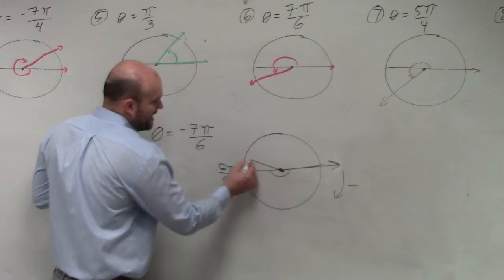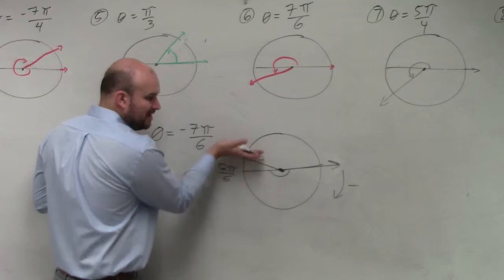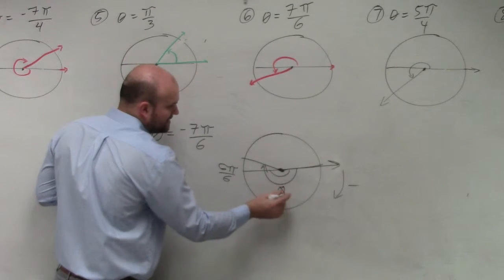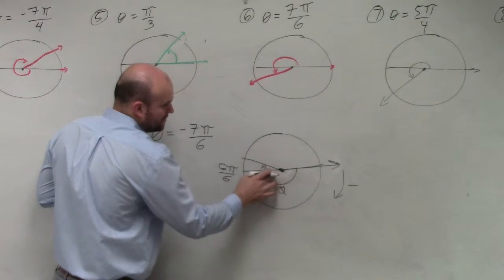So we're just going to go an extra pi over 6 above the x-axis. So our angle is going to look like that, and that's your theta. OK?